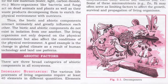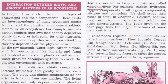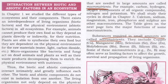Living organisms require at least 40 elements of different quantities of inorganic substance to survive. The elements needed in large amounts are called macronutrients — for example carbon, hydrogen, oxygen. These are the components which organisms require in a huge quantity. The substances required in small quantities are called micronutrients, for example copper, manganese, selenium, zinc.